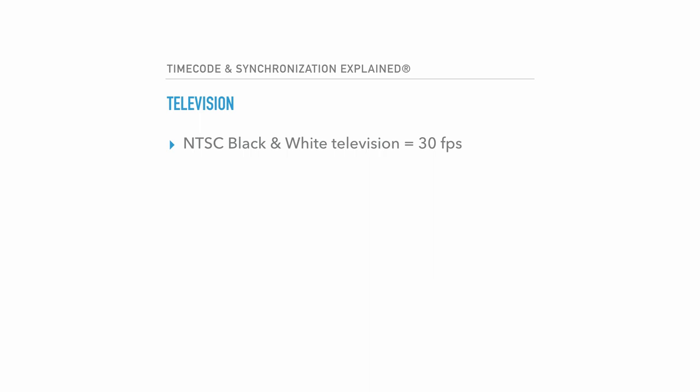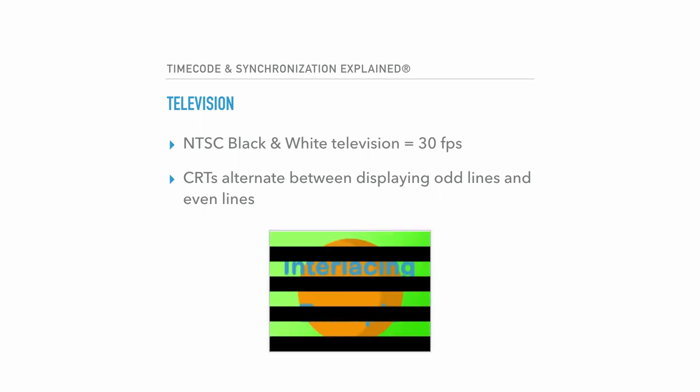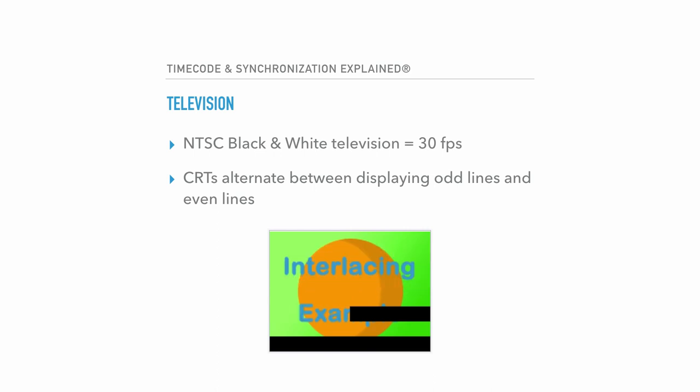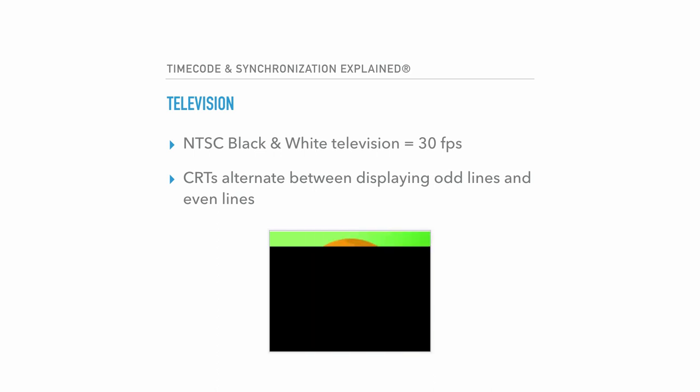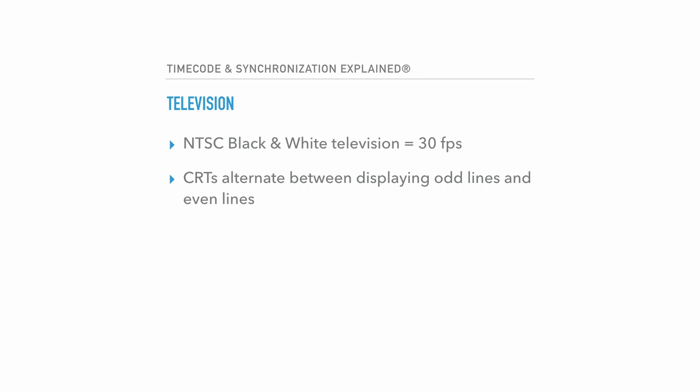Now why 30, you might ask? Video produced on old television screens and CRT monitors did not display the entire image at once – rather, they would display half of the image alternating on odd and even lines drawing from the top down, 30 times per second on the odd numbers and 30 times per second on the even numbers. But again, why 30?